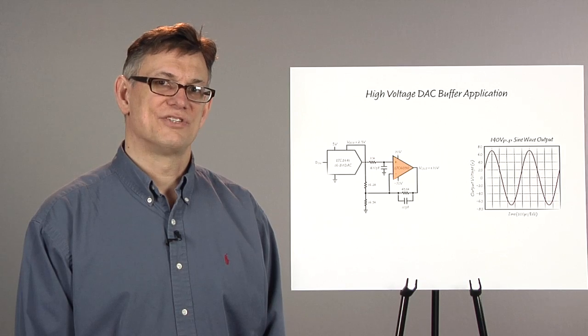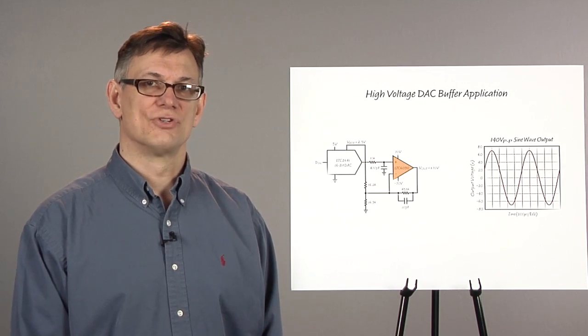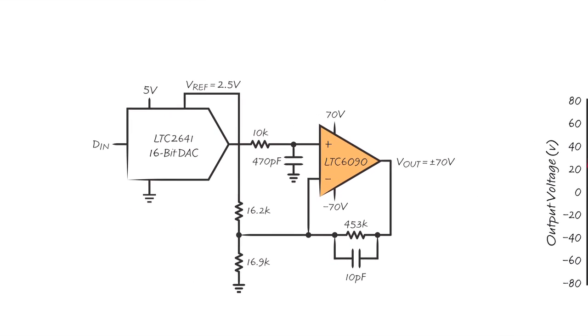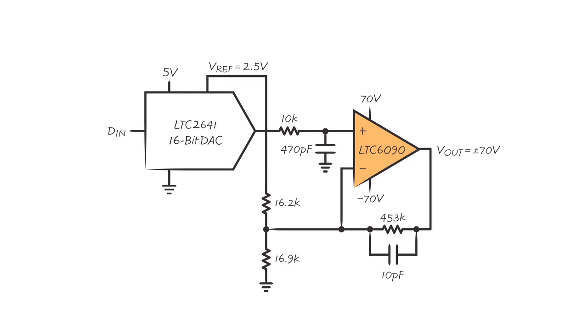The final application I want to show is a high voltage DAC buffer. The LTC6090 is ideal for buffering and converting low voltage unipolar DAC outputs into either high voltage bipolar or unipolar outputs. This kind of application will find use in automated test equipment or in any application where large accurate programmable voltages are needed from a single supply low voltage CMOS DAC.